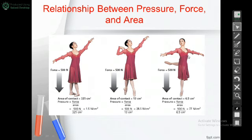In the last case, the ballerina is standing on only one toe, so the area of contact decreases to 6.5 centimeters squared. Force over area — 500 over 6.5 — gives us 77 Newton per centimeter squared. As the area of contact decreased, the pressure increased. So area of contact and pressure are inversely proportional.